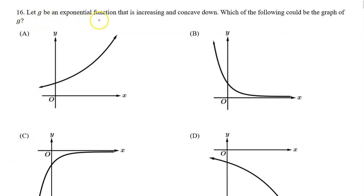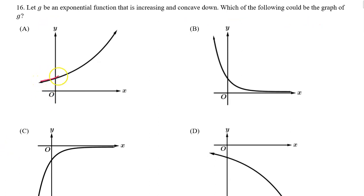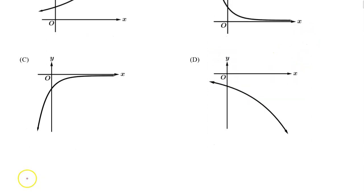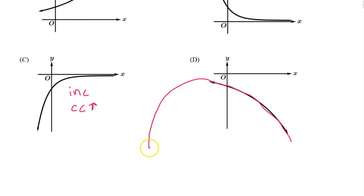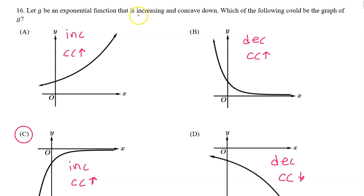Number sixteen: let g be an exponential function that is increasing and concave down. Which of the following could be a graph of g? A is increasing and concave up. B is decreasing and concave up. C is increasing and concave down. D is decreasing and concave down. We were looking for the one that is increasing and concave down, so the answer is C.